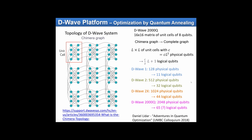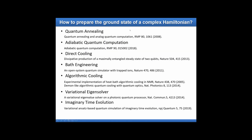Because of the importance of this problem, there are many approaches using quantum systems to prepare the ground state. For example, quantum annealing — which is what D-Wave is pushing. I'll mostly talk about adiabatic quantum computation, and also other ways of directly cooling systems, bath engineering or algorithmic cooling, and a bit about the variational quantum approach to preparing the ground state. Today I'll focus on quantum annealing and adiabatic quantum computation.